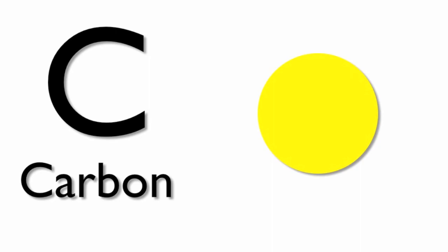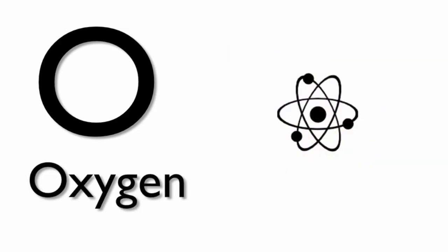Carbon is another element found on the periodic table of elements. Carbon is just one type of atom that we represent here with a yellow circle. Oxygen, once again, is found on the periodic table of elements and is just one type of atom that we will represent with a blue circle.